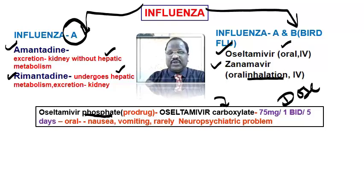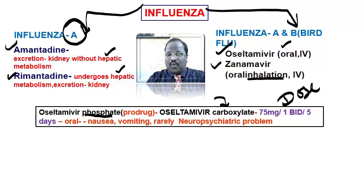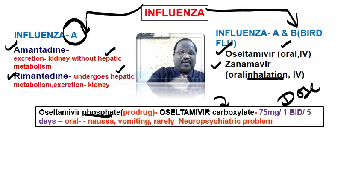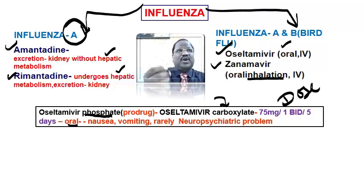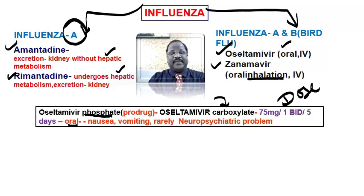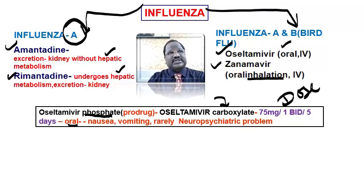The dose of oseltamivir for influenza including bird flu is 75 mg, twice daily (BID) for 5 days. Regarding adverse effects: since it is given orally, common problems include GI toxicity like nausea, vomiting, and diarrhea. Rarely it may cause neuropsychiatric problems.